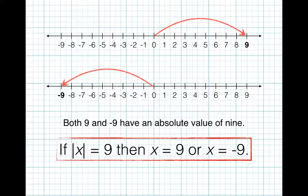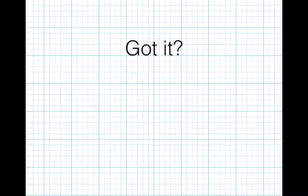So, if the absolute value of x is equal to 9, then x is equal to 9, or x is equal to negative 9. Got it? Let's try one more.